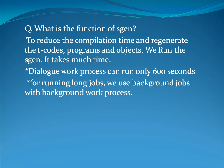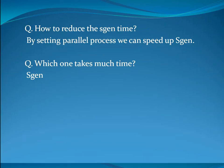We run Sgen and it takes much time. How much time does the dialogue work process run? The dialogue work process runs only 600 seconds. For running long jobs, we use background jobs with a background work process. How to reduce the Sgen time? By setting parallel processes, we can speed up Sgen.